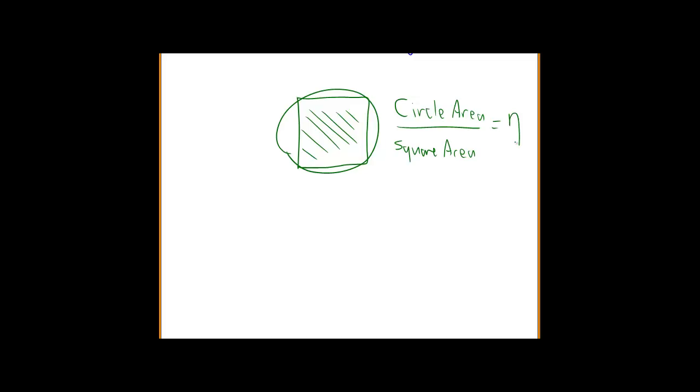So not only does eta describe a fundamental property of circular paths over straight paths, it also describes a fundamental property of circle areas over square areas. Now isn't that much nicer than either tau or pi in the way that they describe circles? But what about all these people, these tau defenders, who say that tau represents the distance around a circle and therefore in terms of angle represents a turn of one full revolution?